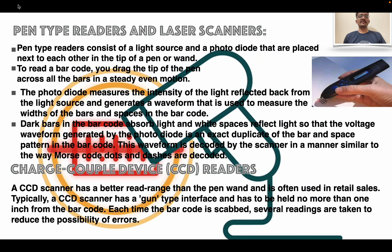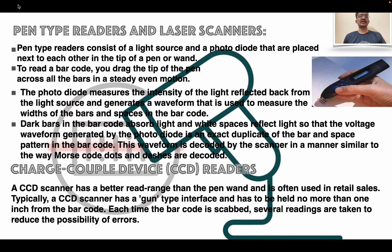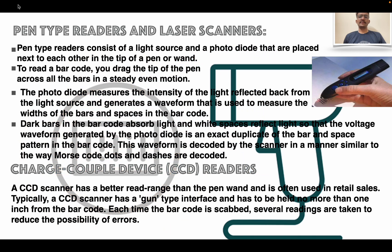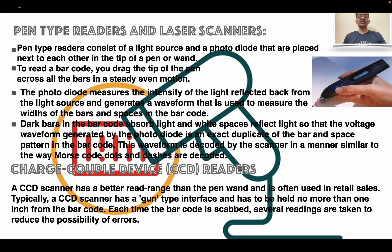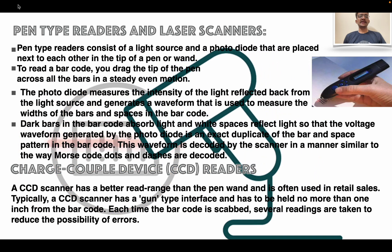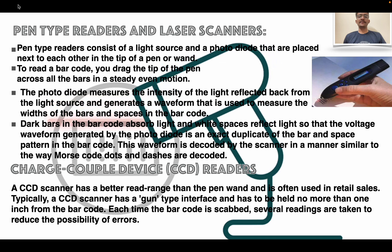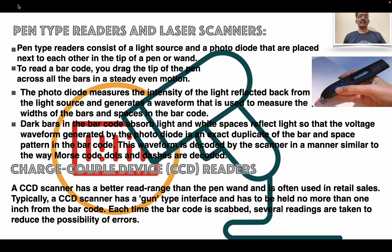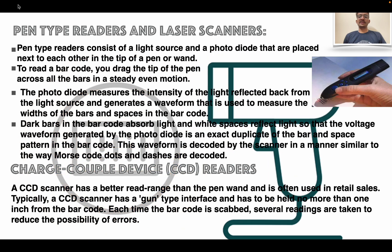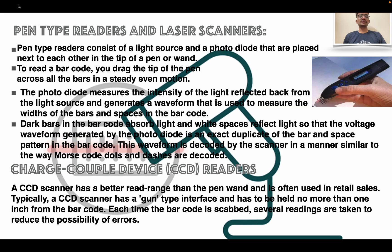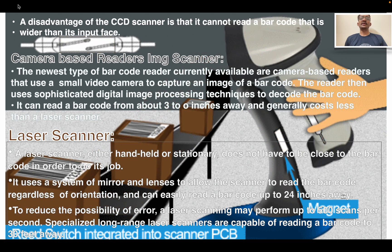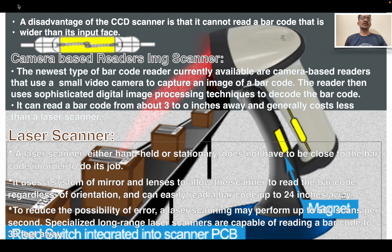Charge coupled device (CCD) reader: a CCD scanner has a better read range than the pen type reader and is often used in retail sales. Typically, a CCD scanner has a gun-type interface and has to be held no more than one inch from the barcode. Each time the barcode is scanned, several readings are taken to reduce the possibility of error. A disadvantage of CCD is that it cannot read a barcode that is wider than its input face.